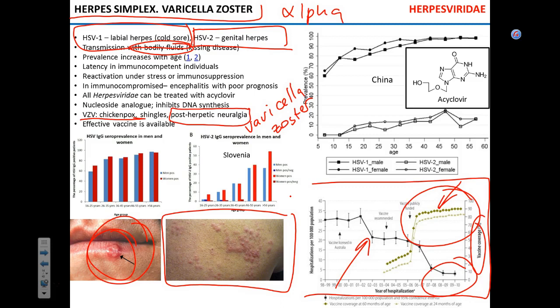Herpes establishes latency and reactivates during immunosuppression; this is a big risk factor for people with AIDS or patients on immunosuppressive therapy like chemotherapy. If herpes gets into the brain, the resulting encephalitis is usually lethal — it is a really dangerous disease.